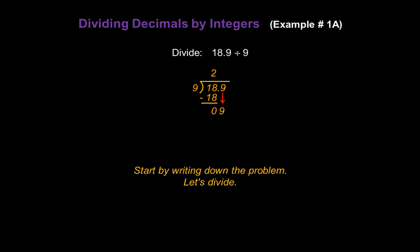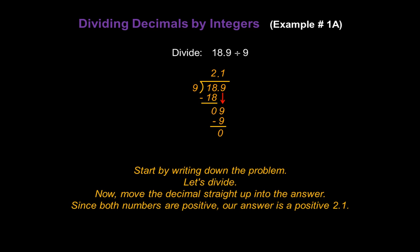How many times does 9 go into 9? 1 time. 9 times 1 is 9 with another remainder of 0, and we're done dividing. Now move the decimal straight up into the answer just like this. Perfect. Since both numbers are positive, our answer is a positive 2.1.